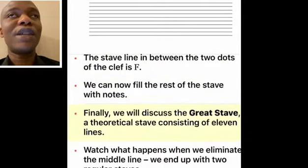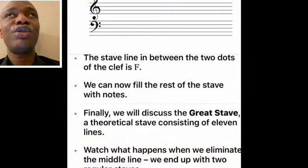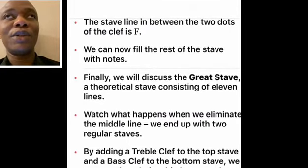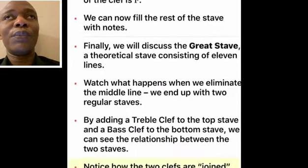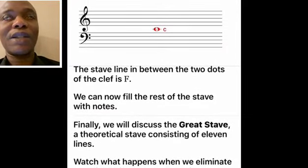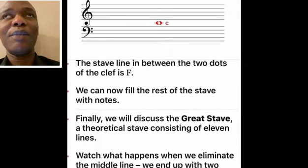Now we're going to the Grand Staff. The Grand Staff is split into two — you have the treble clef at the top and the bass clef at the bottom. Now at the middle of that Grand Staff you have a C. That C is called middle C, and that middle C is going to be our reference for our next exercise.